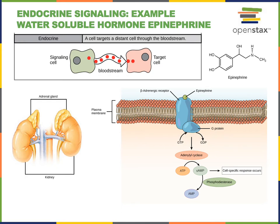Endocrine signaling is a form of intercellular signaling where the chemical message is a hormone. Hormones are intercellular signals released by endocrine glands that travel in the blood. The bloodstream can carry a hormone a long distance from the signaling cell to the target cell whose function is being regulated by the hormone.